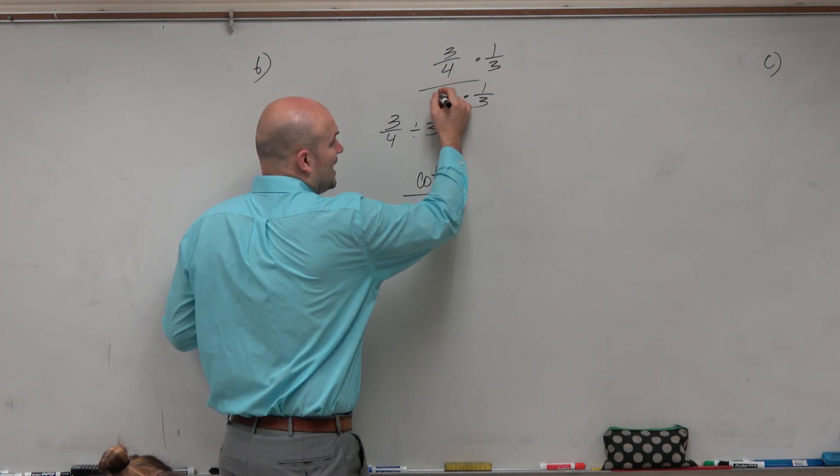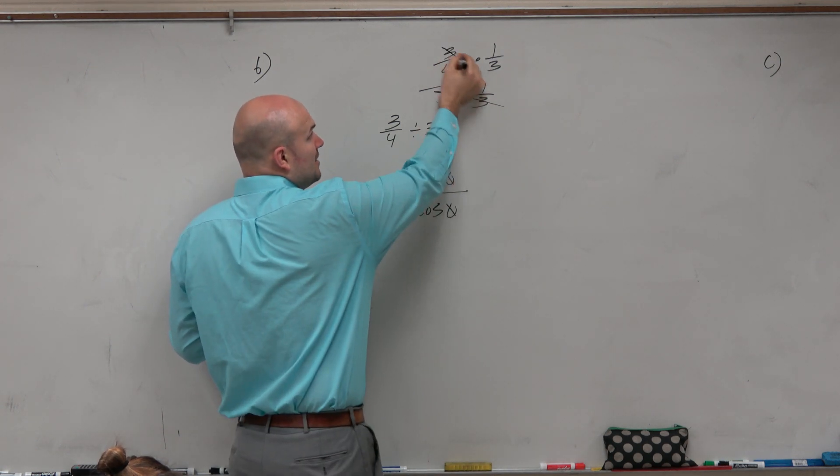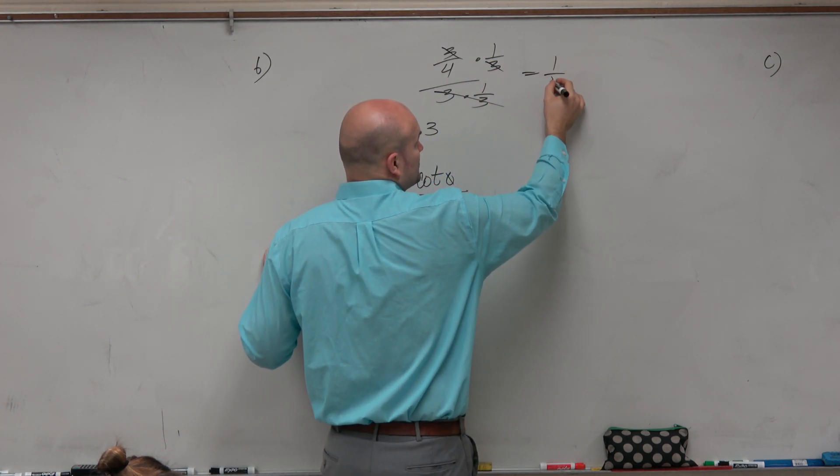So when I do that, that obviously goes to 1 in my denominator. These divide out, and I'm left with 1 fourth.